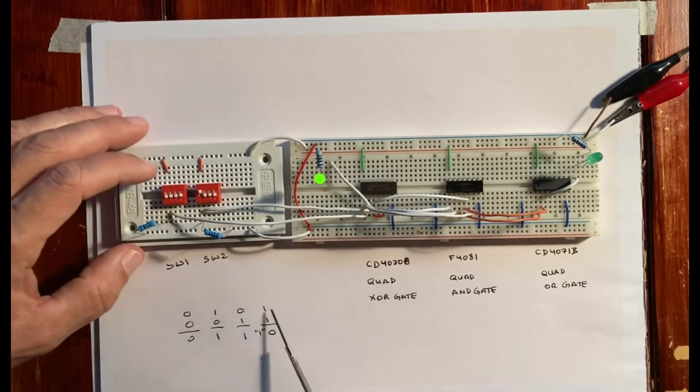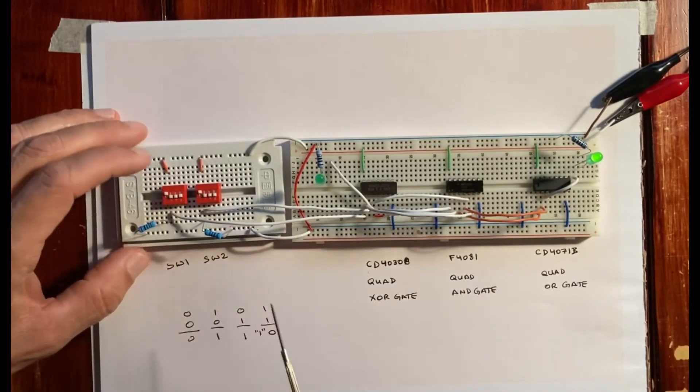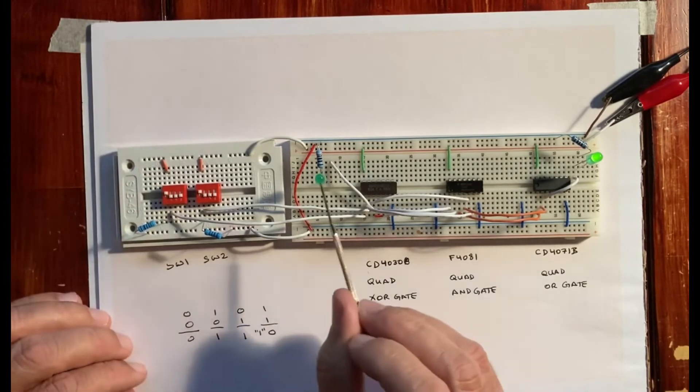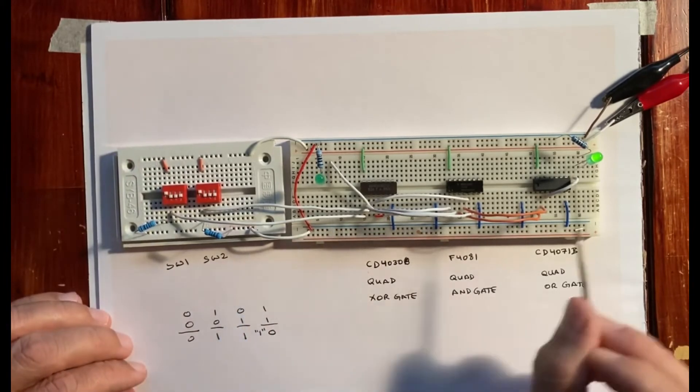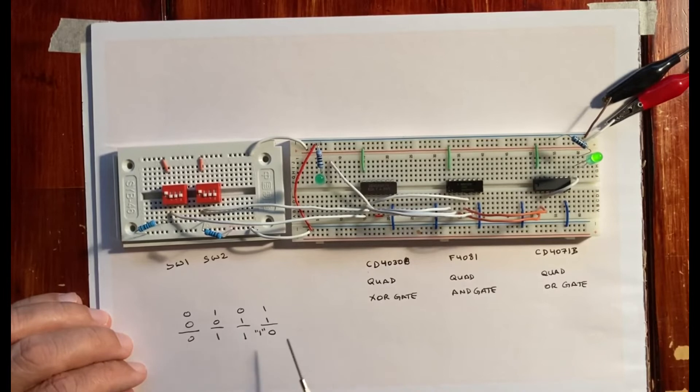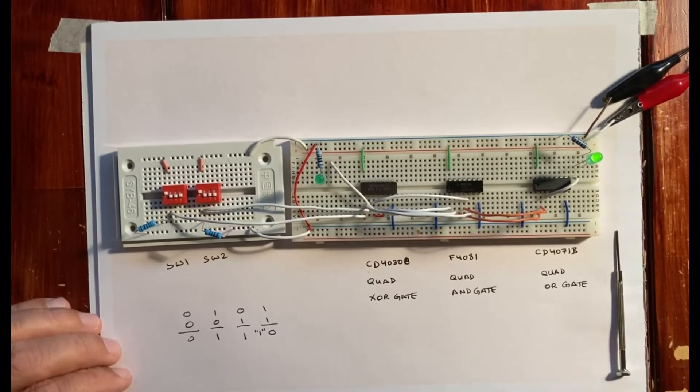And the last one we do is 1 and 1. The 1 and 1 gives us a 0 in our output bit but a 1 in our carry bit. So right now the 1-bit adder is working okay. We proceed to the next part of our project.